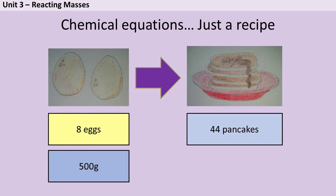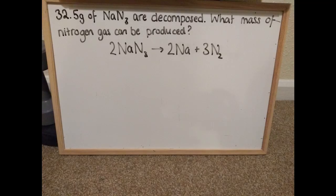That's all reacting mass calculations are. They're putting a mass into a usable format and then using a recipe to figure out how many of something else you'll make. Let's take an example. The question tells me that 32.5 grams of sodium azide is decomposed, which means broken down. I need to work out what mass of nitrogen is released. They've given me the balanced symbol equation.